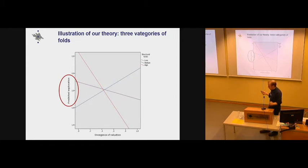This is an illustration of the effect. We have three categories here, the different lines. The blue one is low levels of structural folds. The middle line is medium levels. And the red line, which goes like this, is high levels of structural folds. And then on the y-axis you find innovativeness or exploration in this case, which is the same thing as innovativeness in our research. And on the x-axis, you have divergence of valuation.